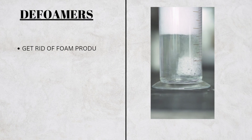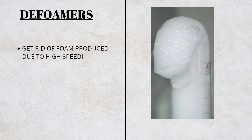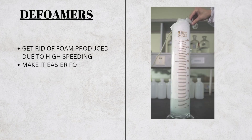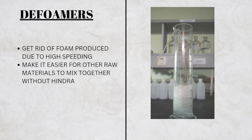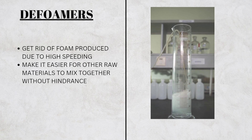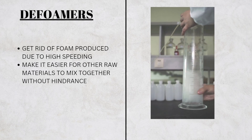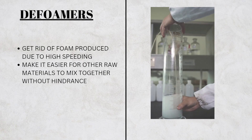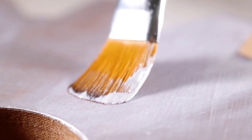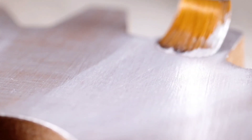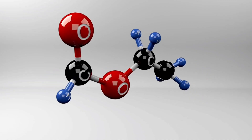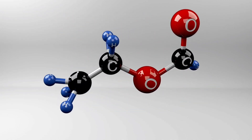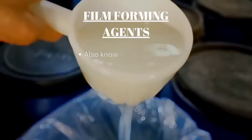The next important raw material is a defoamer. During a reaction, production, and high-speed mixing of raw materials, foam can be produced. Foam is known to hinder particles from dispersing evenly, interfere with the reaction, and is generally not good for the production process. A defoamer is a substance that dissolves the foam away and makes sure that your reaction is smooth throughout.